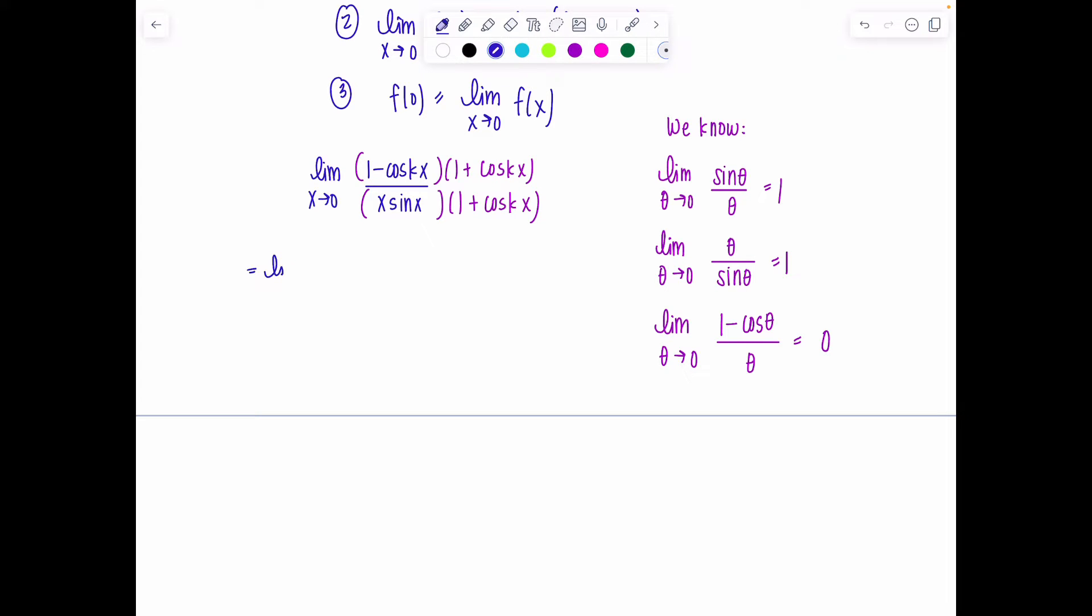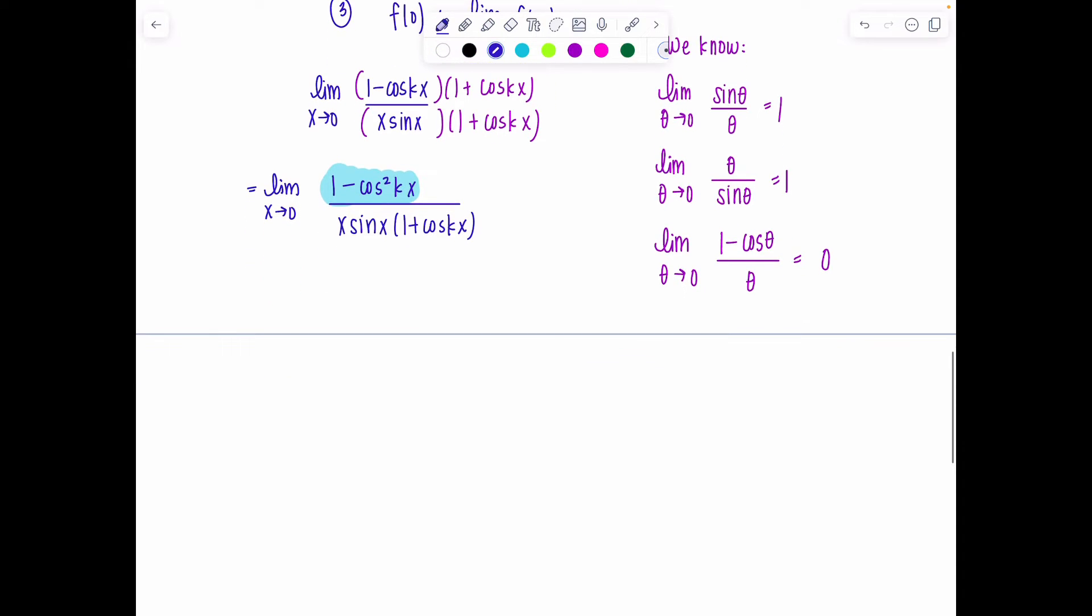So we have the limit as x approaches 0. This is (1 - cos²(kx))/(x sin x)(1 + cos(kx)). And then the whole point of this conjugate business is so that we can use a Pythagorean identity. So I can replace the numerator 1 - cos²(kx) with sin²(kx) over x sin x times 1 + cos(kx).